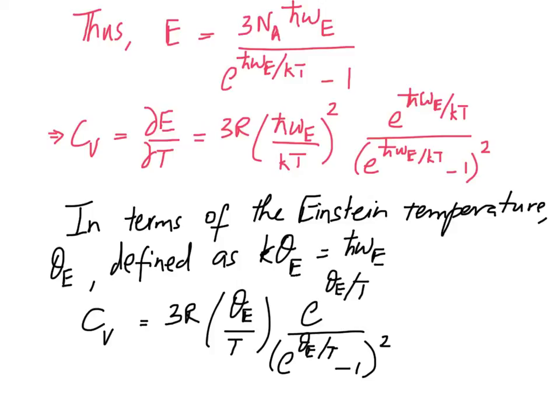Before we show a plot of the specific heat versus temperature, let's define a new variable theta e, which is called the Einstein temperature. Theta e is defined such that k times the Einstein temperature equals h-bar times the Einstein frequency. So we are trading omega e for theta e and we substitute that in this expression for the specific heat and we get this new expression. There is only one free parameter involved, the Einstein temperature or the Einstein frequency.